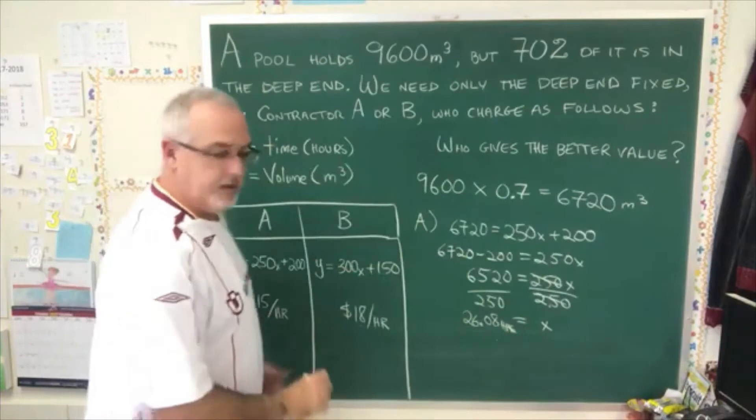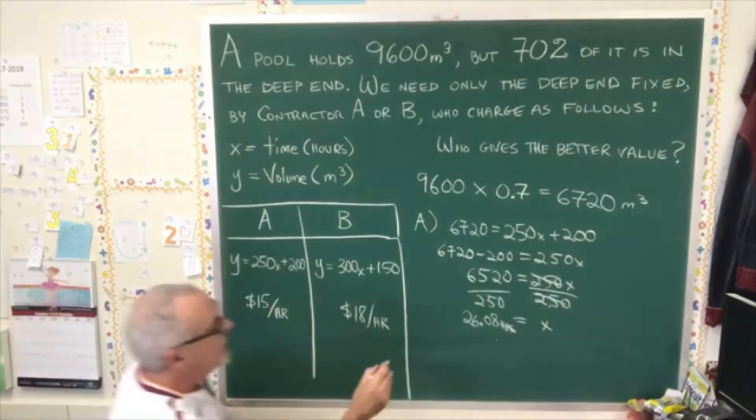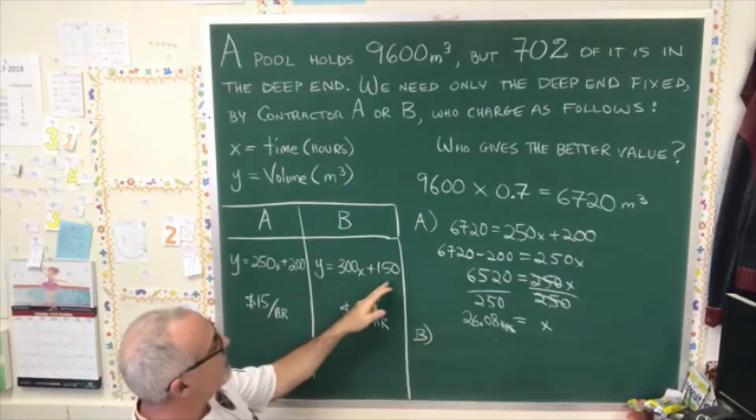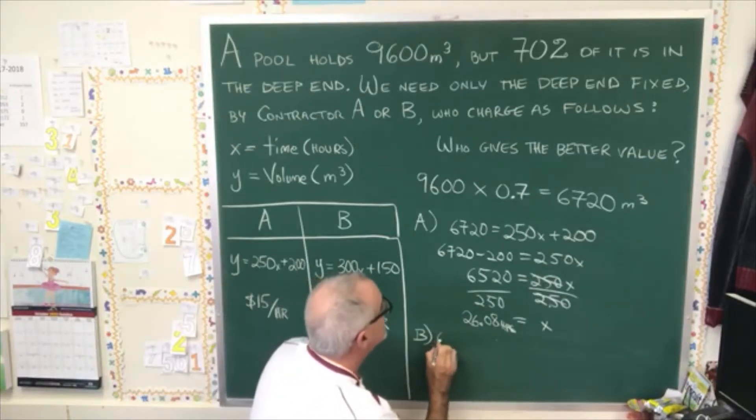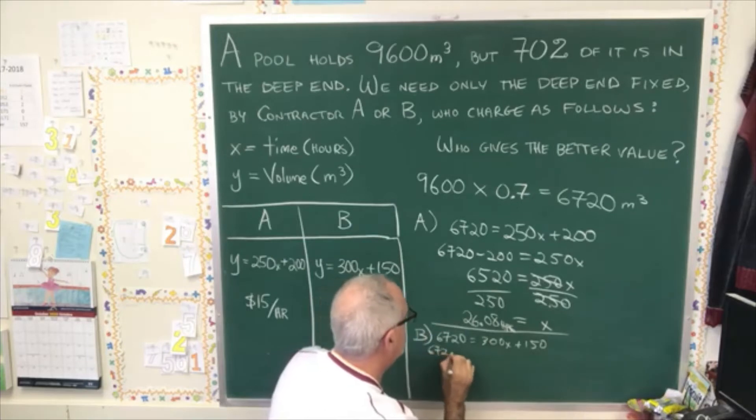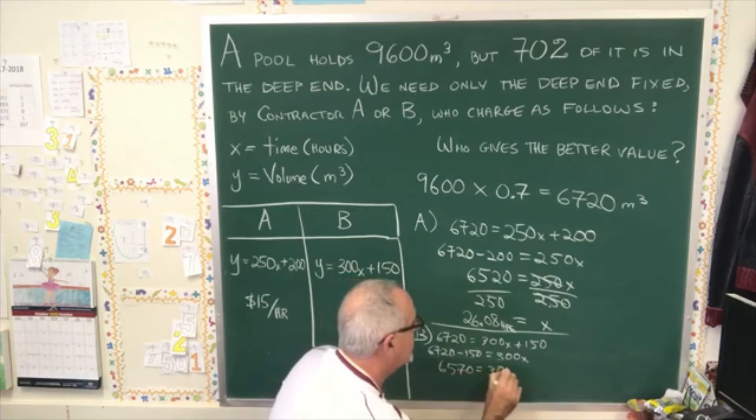Now we do the same thing with contractor B. I'm running out of room, so I'll write down near the bottom of the chalkboard, and I'll try to use my space better. We have Y equals 300x plus 150, so 6720 equals 300x plus 150. 6720 minus 150 equals 300x, which gives us 6570 equals 300x. Let's divide both sides by 300.